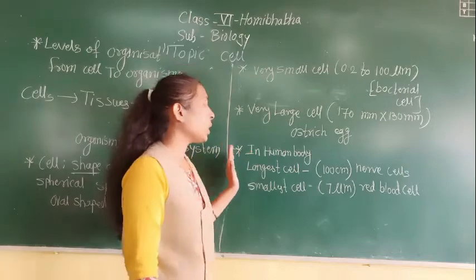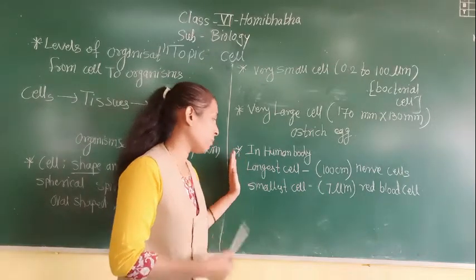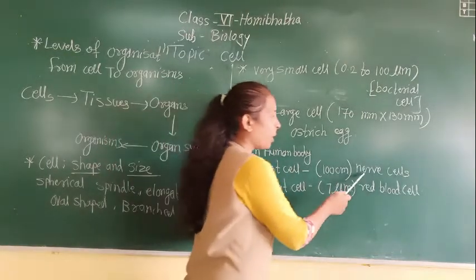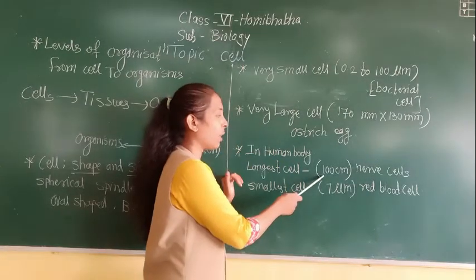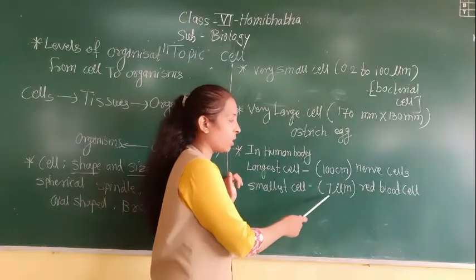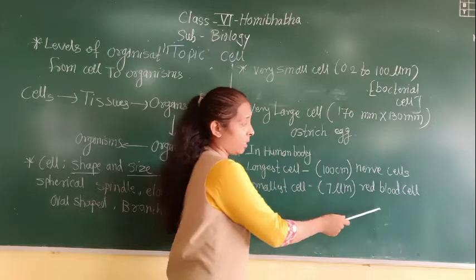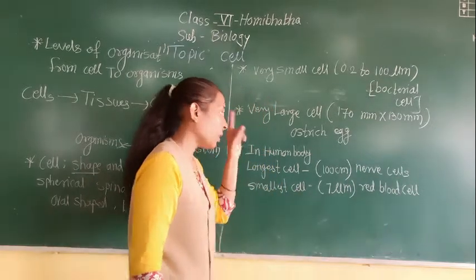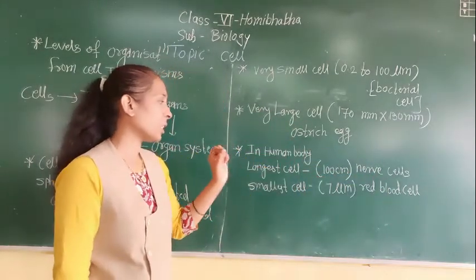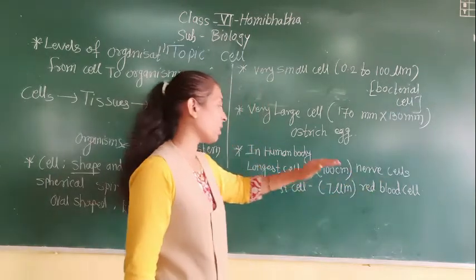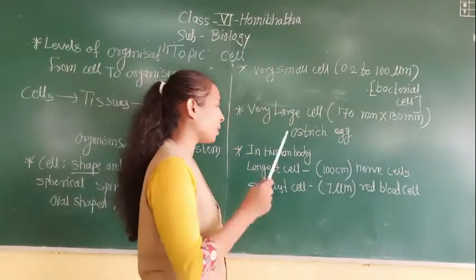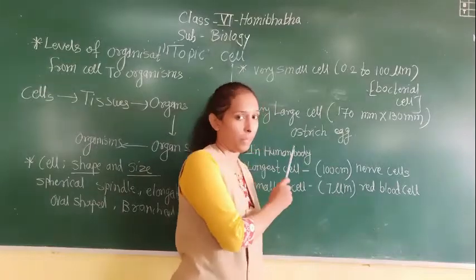In the human body, both the largest and smallest cells are present. The largest cell in the human body is the nerve cell, with a measurement of about 100 centimetres. The smallest cell in the human body is the red blood cell, measuring 7 micrometres. So in the human body, the longest cell is the nerve cell and the smallest cell is the red blood cell.